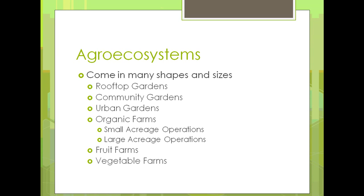Looking at agroecosystems, they come in many sizes, shapes, and forms. There are rooftop gardens, where you grow something on top of a building. There are community gardens, more common in urban areas but found in small towns too. They're areas where neighbors come together and mutually grow things, each with their own small plot in a larger shared area. It could be a teardown property, an old factory site, with a lot of raised beds.